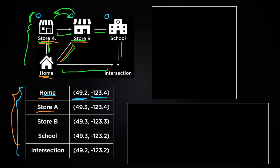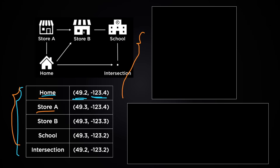So you need to figure out a way to store that street connection information on your computer, and there are actually a few different options. One option is to store all possible paths in a list-like format. For example, one path will be from store A to home, and another will be home to store A.